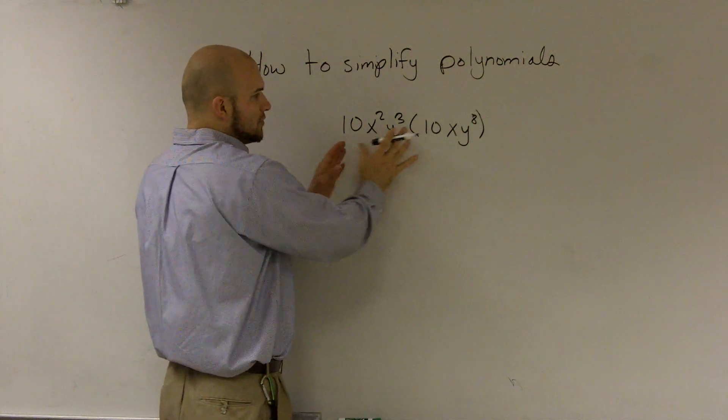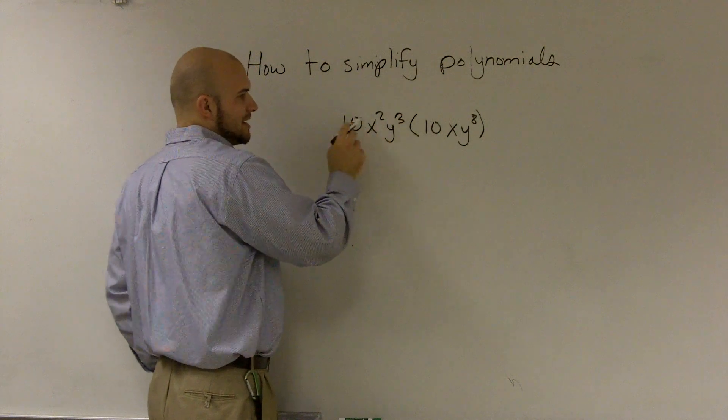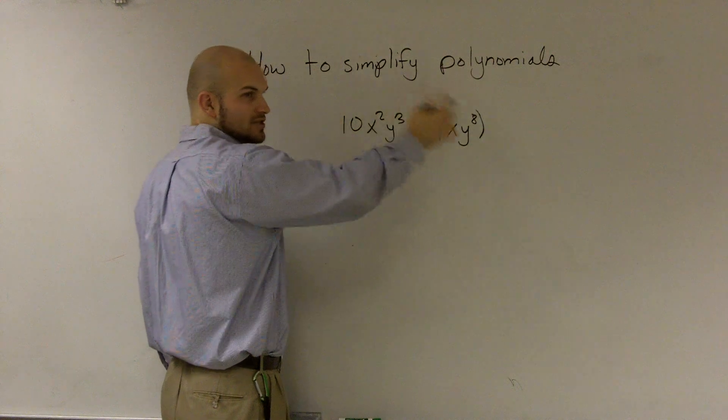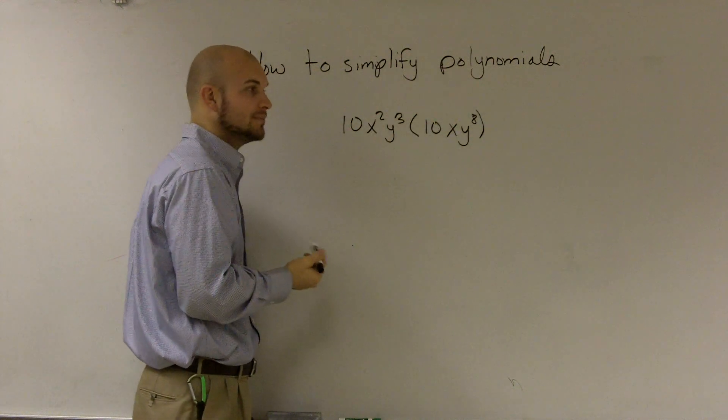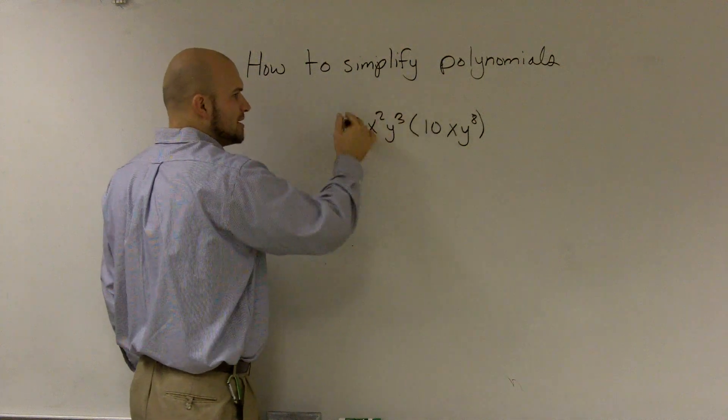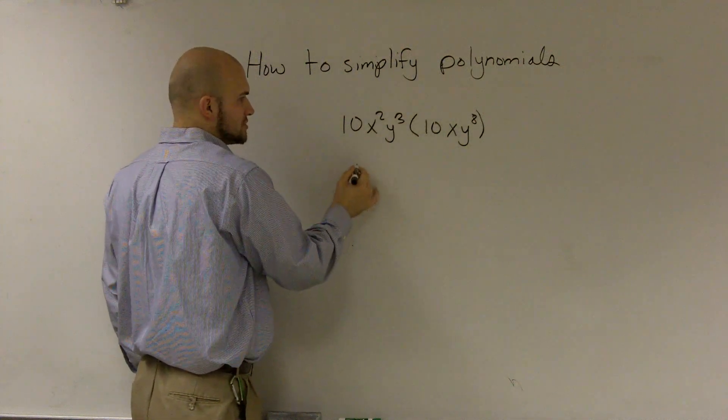But you've got to remember, these are both terms, so I'm not going to distribute the 10. You can only multiply your 10 times your other 10. There's no addition or subtraction where you need to multiply by every single term. So I'm just going to multiply 10 times 10, which gives me 100.